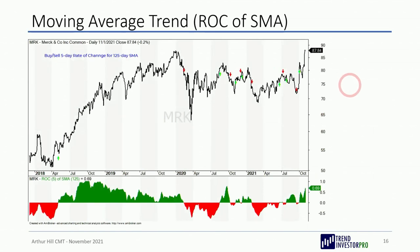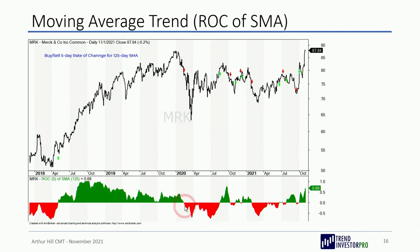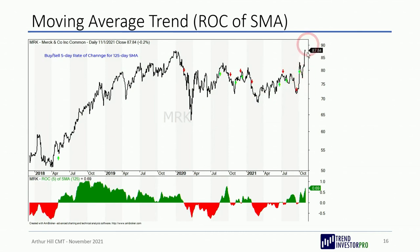Next is the Rate of Change of a Moving Average. Instead of looking for price crosses above and below a moving average, you wait for the moving average itself to change direction. When the Rate of Change for the 125-day SMA turns positive the oscillator turns green, and when it turns negative — meaning the moving average has turned down — the oscillator turns red. Here on Merck you can see a great trend followed by a period of whipsaws, and we're currently on a bullish signal with a big breakout from a triangle from roughly March to August 2021.